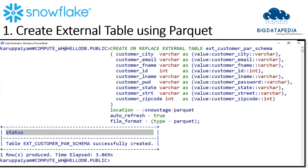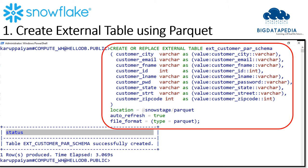Let me create an external table using Parquet file format. In this command we are mapping all the columns with the Parquet schema using aliases. We declare the stage path in the location and format as Parquet in the file format. Once the table is created successfully, the outcome will appear in the result tab.